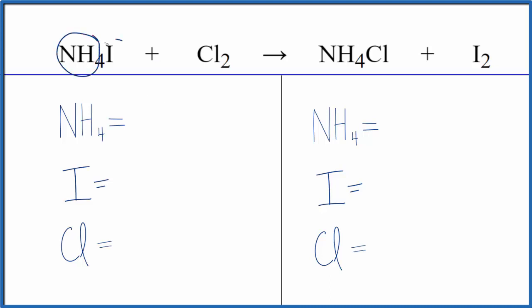We have ammonium iodide here, and then we have chlorine gas. We end up with ammonium chloride and iodine gas.